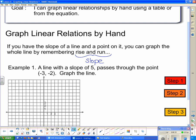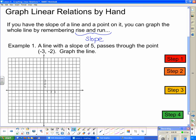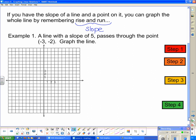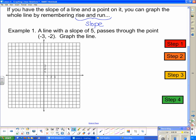So let's have a look at example number one, and we'll learn this through steps during this example. Example number one says a line with a slope of five passes through the point negative three, negative two. Graph the line. Well, I've got a set of steps here. Let's follow them. First step says plot the point. Now that's easy enough. Negative three, negative two. I need to go back three, one, two, three, and down one, two. And there's my point negative three, negative two.